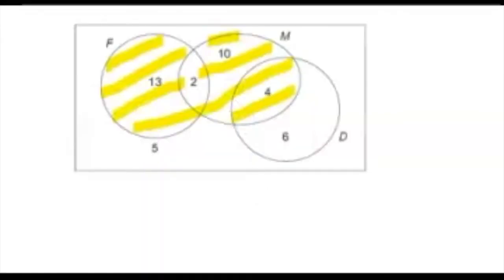We now want the probability that a student does French or Maths or both. This is the yellow region, and we see in there 13, 2, 10, and 4, which is 29 students. So the probability is 29 out of 40.